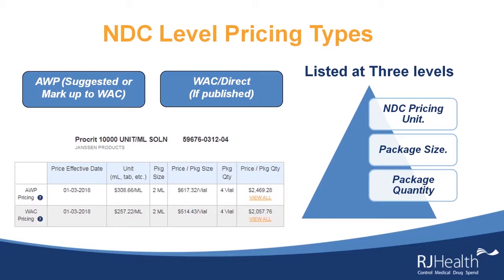Here's an example: 10,000 units per ml solution. Pricing is done at those three levels for both AWP and wholesale acquisition — wholesale acquisition being created by the manufacturer, and AWP adding a 20% markup, provided they don't have a suggested AWP. In this case, the unit price is based on an ml, so there's a rate of $308.66. The package size is a vial with 2 ml, so we multiply the unit price by two.